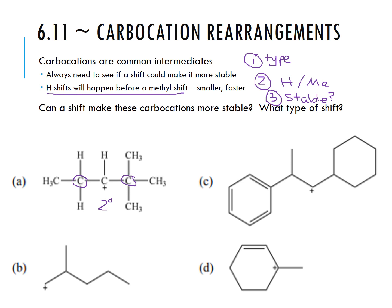Looking at part A, we have a hydrogen available on the left carbon and only methyls on the right carbon. If the hydrogen were to shift over, the carbocation would still be secondary — so that won't happen. If the methyl group shifts over instead, the new carbocation would be tertiary — so this one will go through a methyl shift.